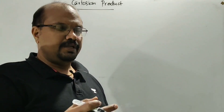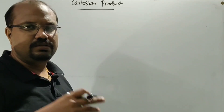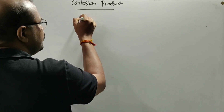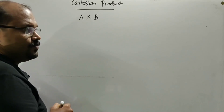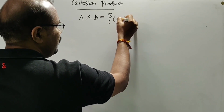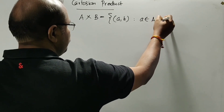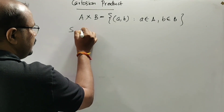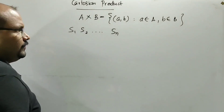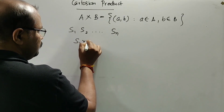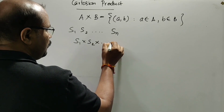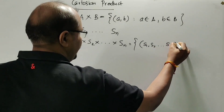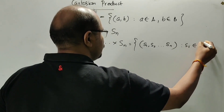First, we will discuss the Cartesian product. This is the collection of the Cartesian product: S1, S2, ..., SN, where each Si belongs to capital Si.